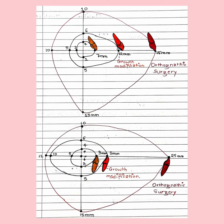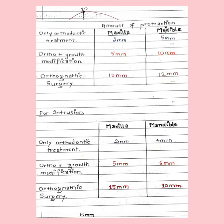Similarly, in the mandible graph, if there is an overjet of 3 mm, that is in the innermost circle and is corrected by orthodontic tooth movement. If it is 5 mm, it is corrected by growth modification and tooth movement. If the overjet is 25 mm, that is corrected by orthognathic surgery. Similarly, we have values for protraction, intrusion, and extrusion.